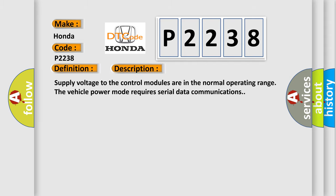Supply voltage to the control modules are in the normal operating range. The vehicle power mode requires serial data communications.